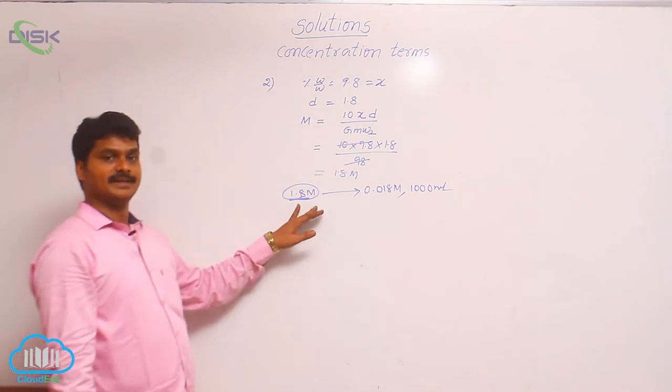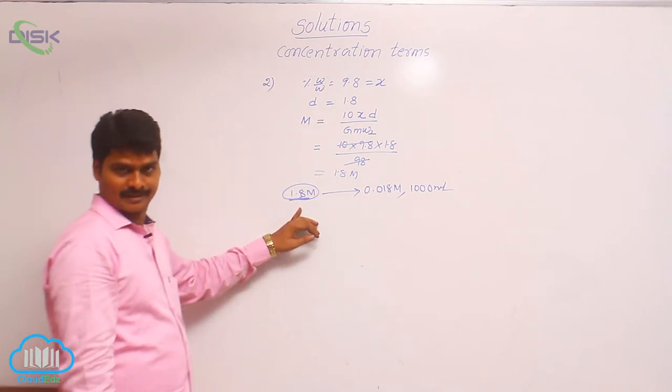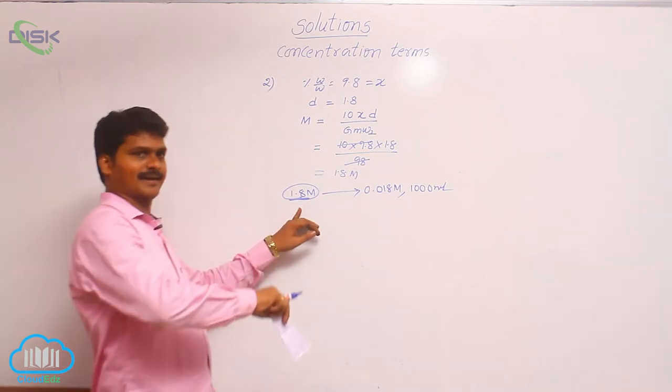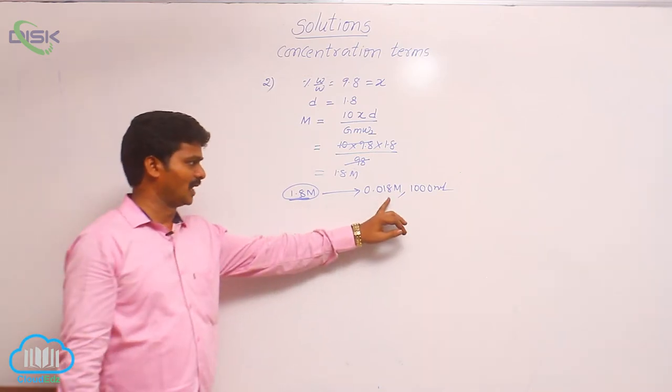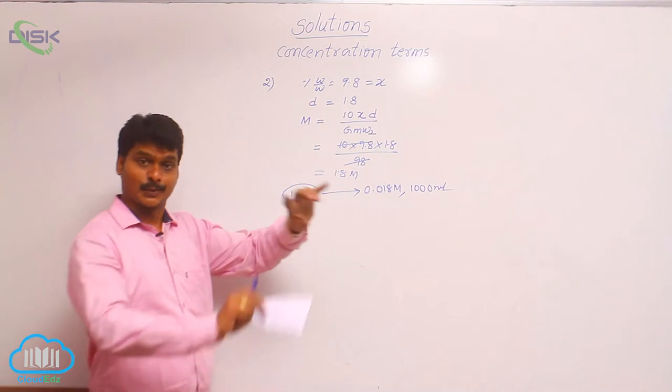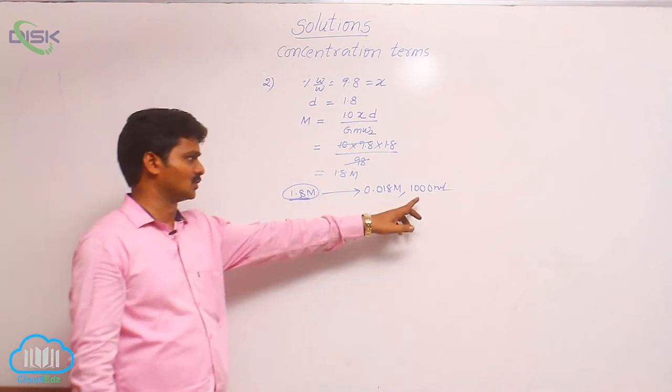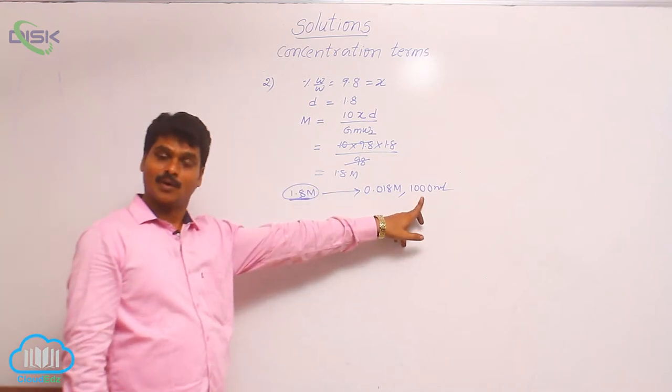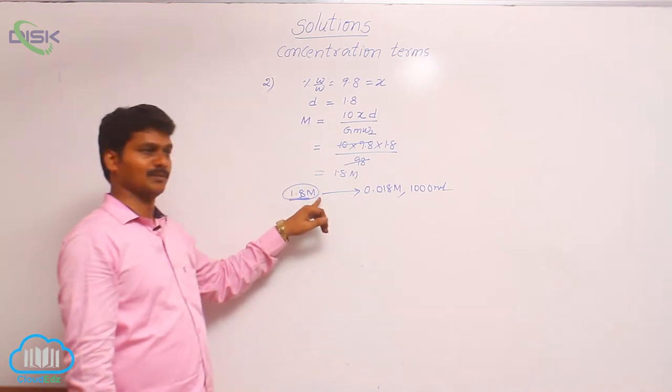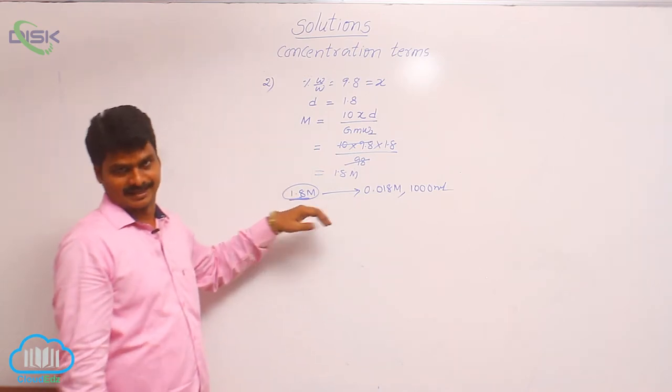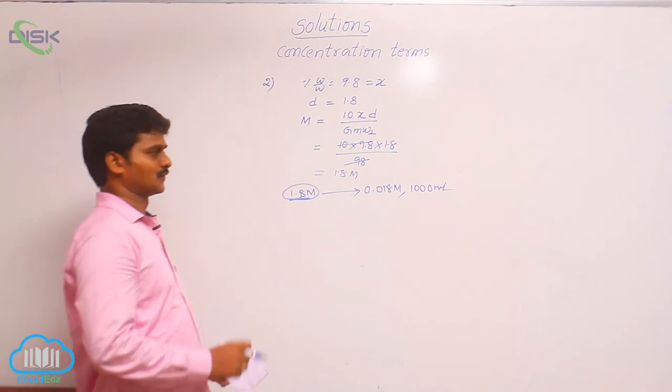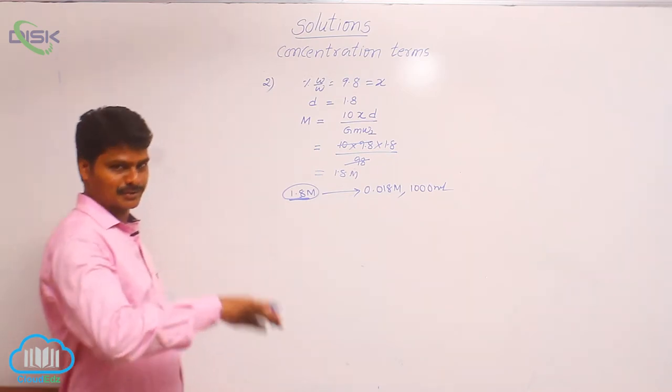That means, here initial molarity 1.8 by the addition of water, it is changed to 0.018. The total volume after the dilution is 1000 ml. What is the volume of this 0.18 molar solution initially taken? That is the question. So, for that, let us use the dilution formula.